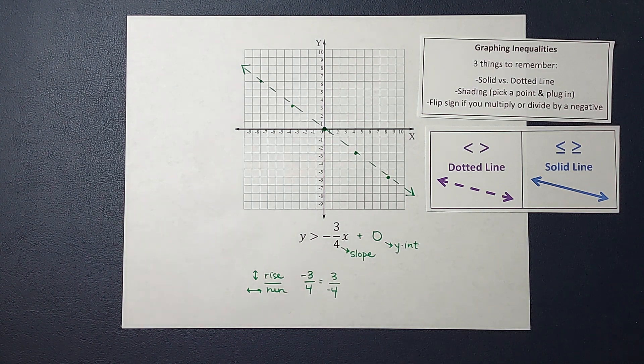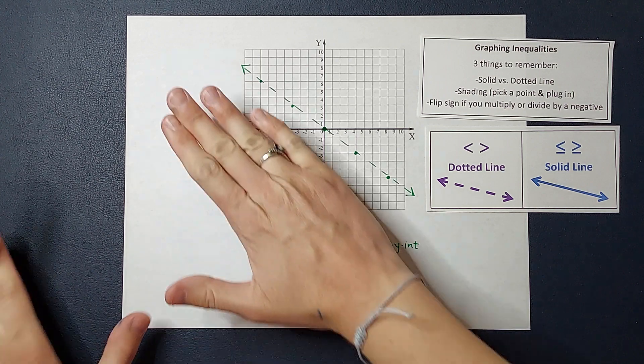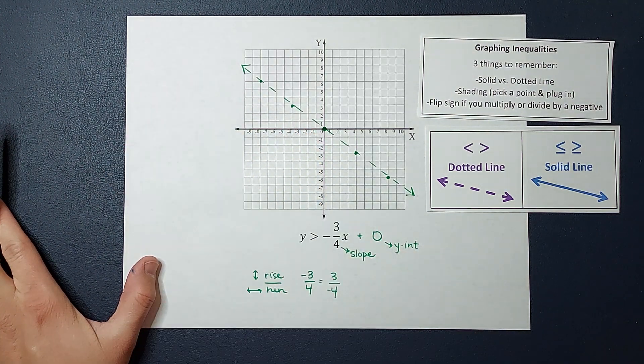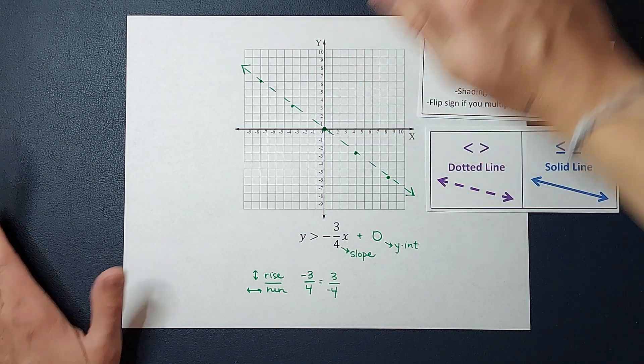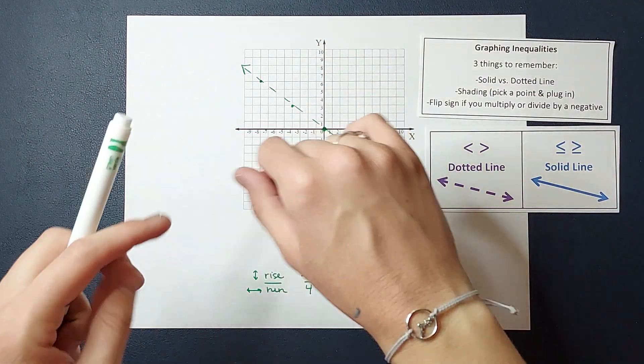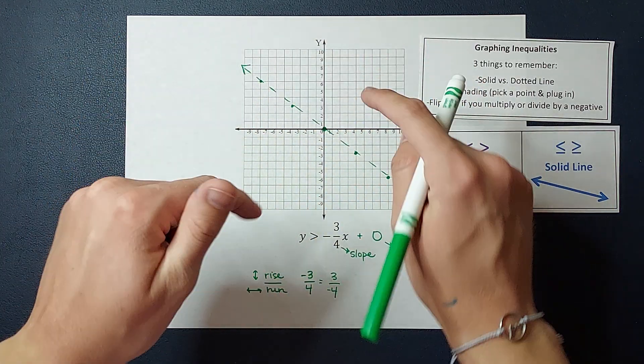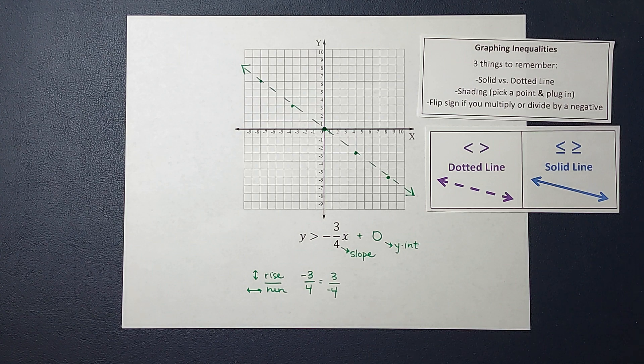Now the last thing that I need to do is shading. Because this is an inequality, I have a lot of possible answers. It is either all the ordered pairs on this side of the line or all the ordered pairs on that side of the line. So to figure out which one it is, what I'm going to do is pick a point on one of these sides and plug it in and see if the answer comes out true.